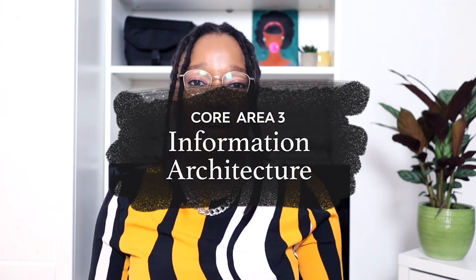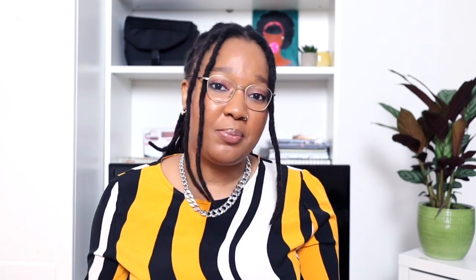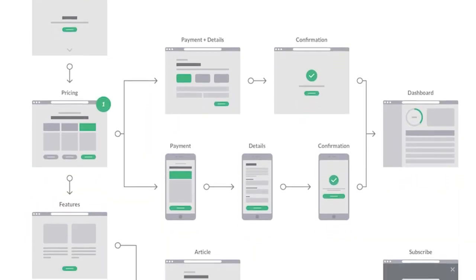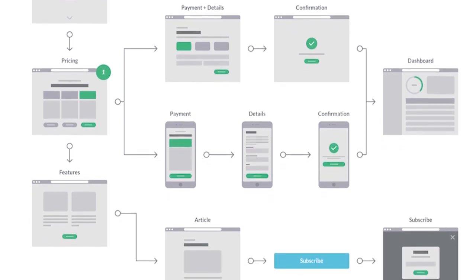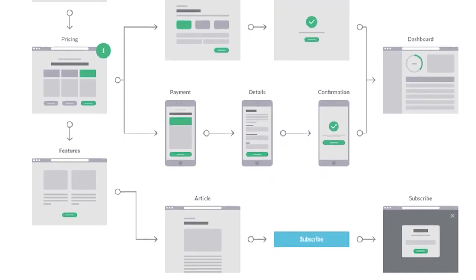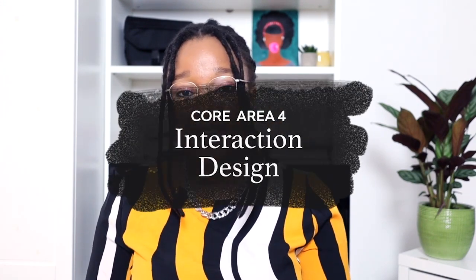The third core area is information architecture. This is mostly about how your content is arranged and ultimately presented to your users. If things are structured properly, then your users can get from point A to point B within your platform without getting too confused. If not, there might be high drop-off points where a user gets frustrated trying to find certain things. It's your job as a UX designer to ensure that everything is laid out as clearly and as easily to navigate as possible. The fourth core area is interaction design, which refers to how everything interacts with each other and how everything ultimately connects.